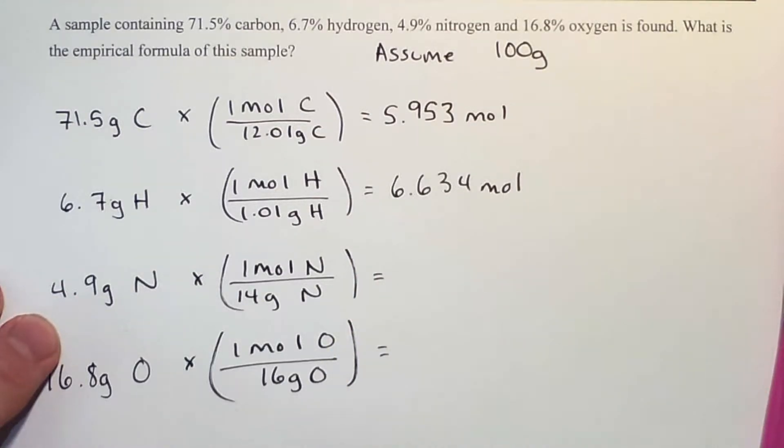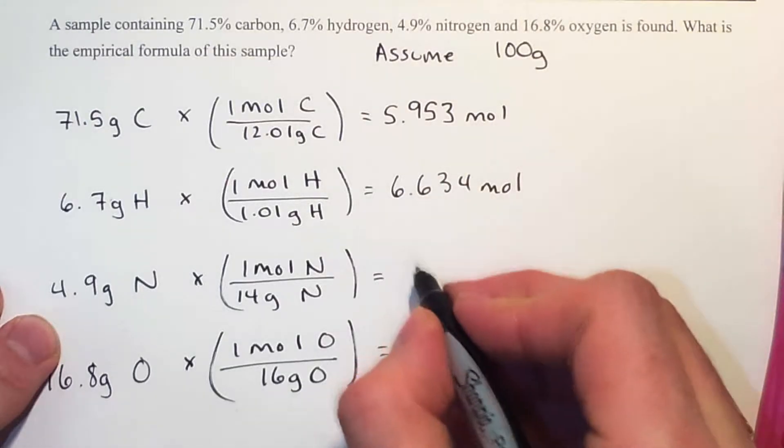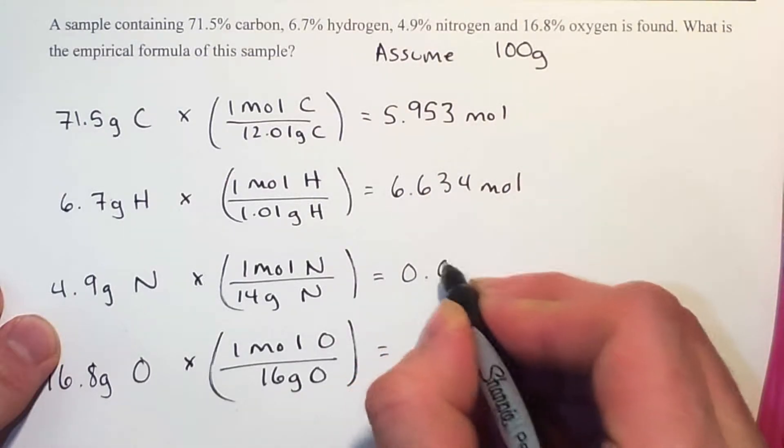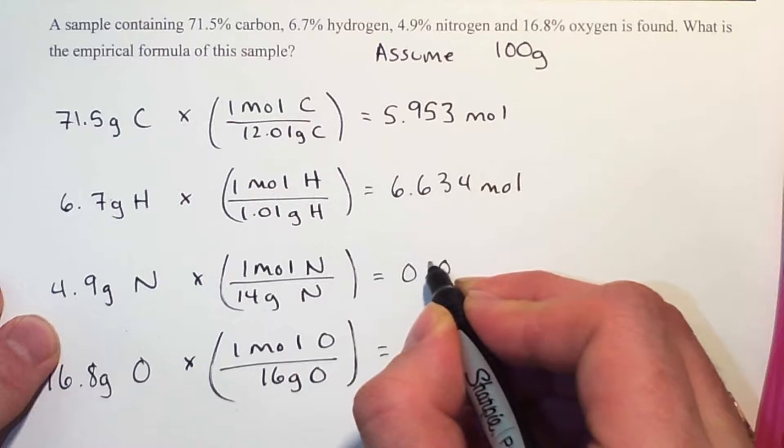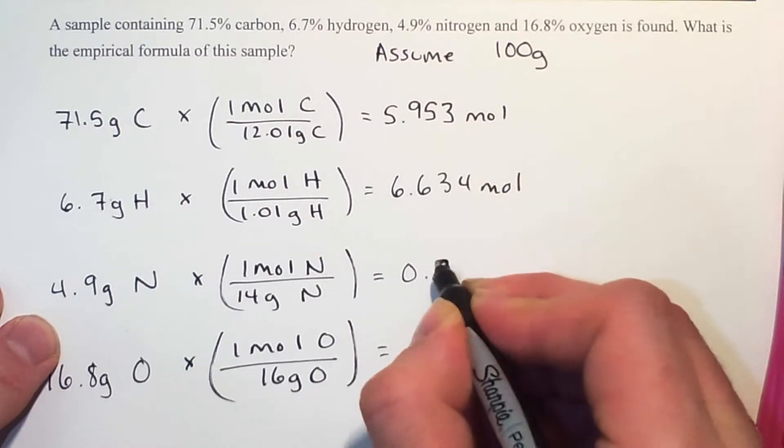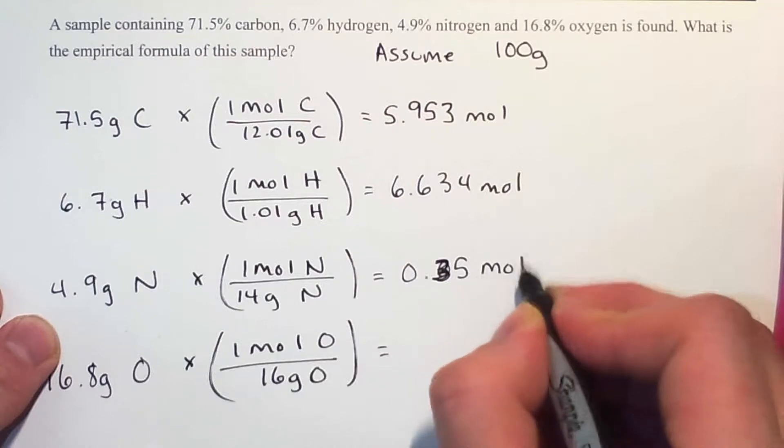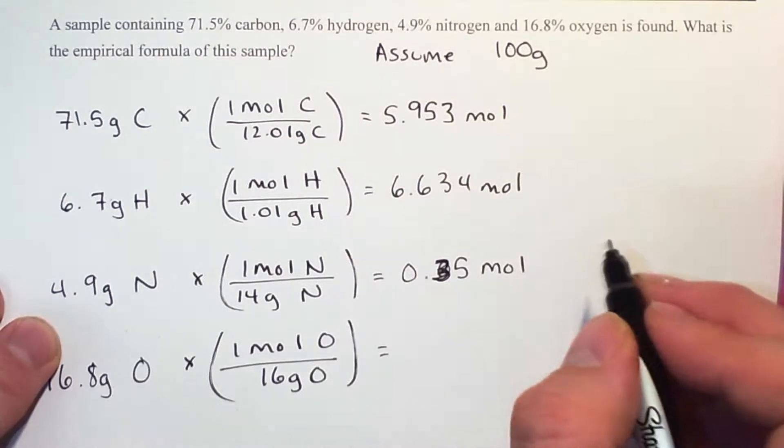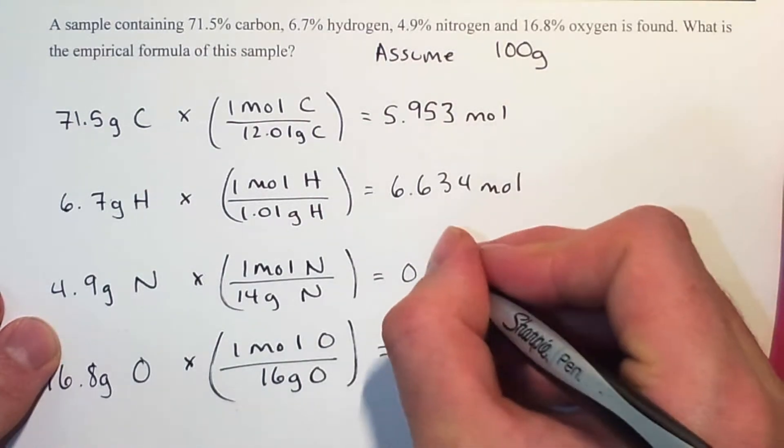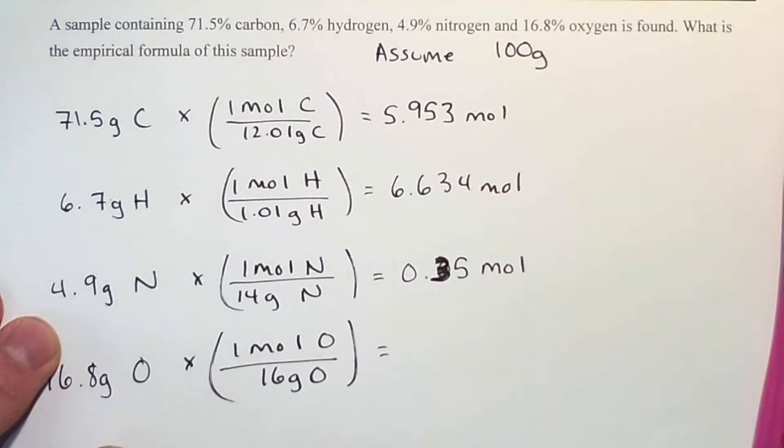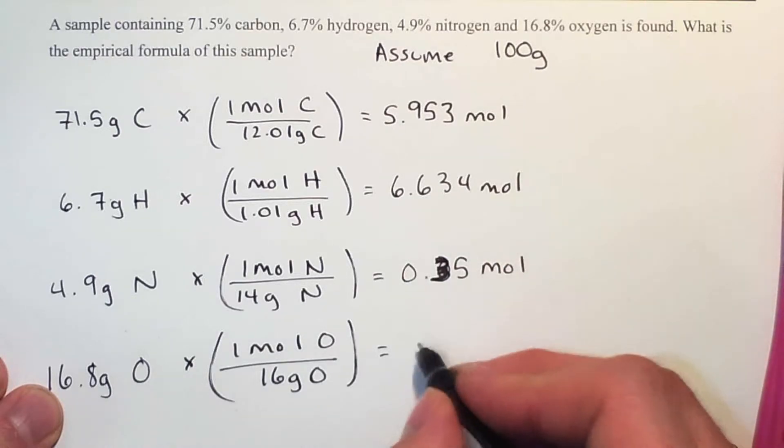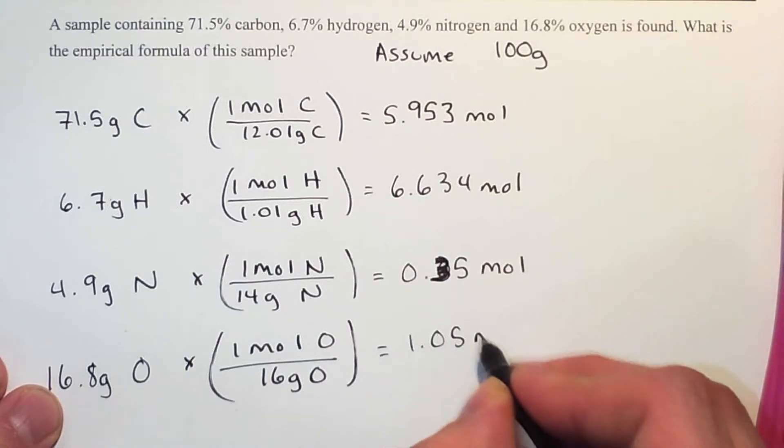4.9 divided by 14 is 0.35 moles of nitrogen. And 16.8 grams of oxygen is equal to 1.05 moles.